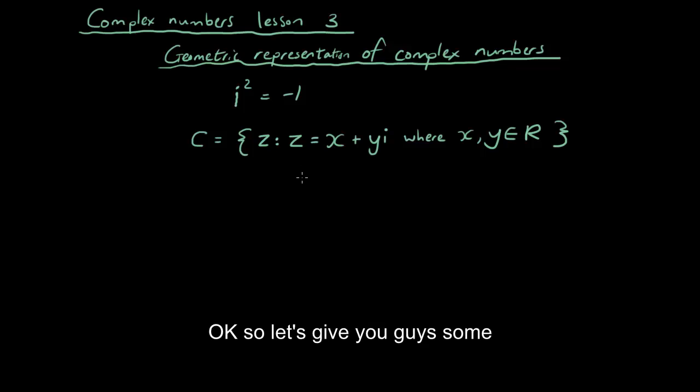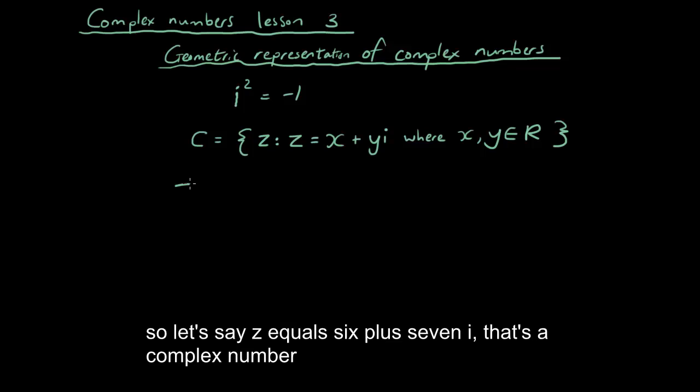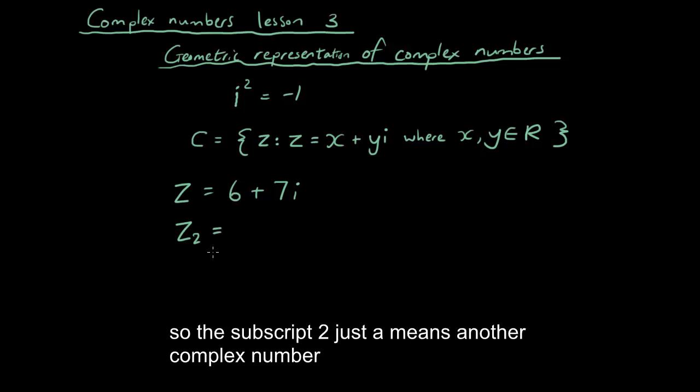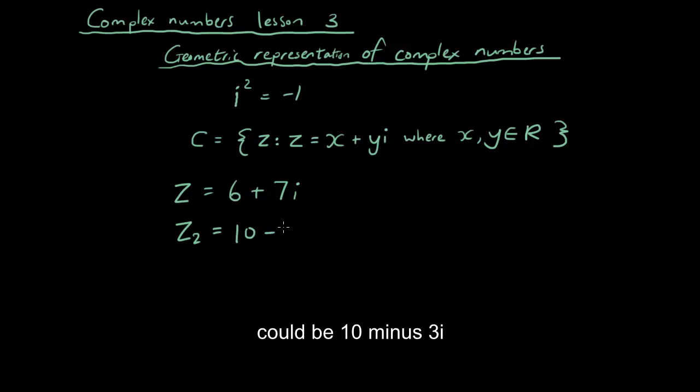Okay, so let's give you guys some examples of complex numbers. So let's say z equals 6 plus 7i, that's a complex number. Or let's say z2, so the subscript 2 just means another complex number, it could be 10 minus 3i. Right, these all belong to the set of complex numbers.